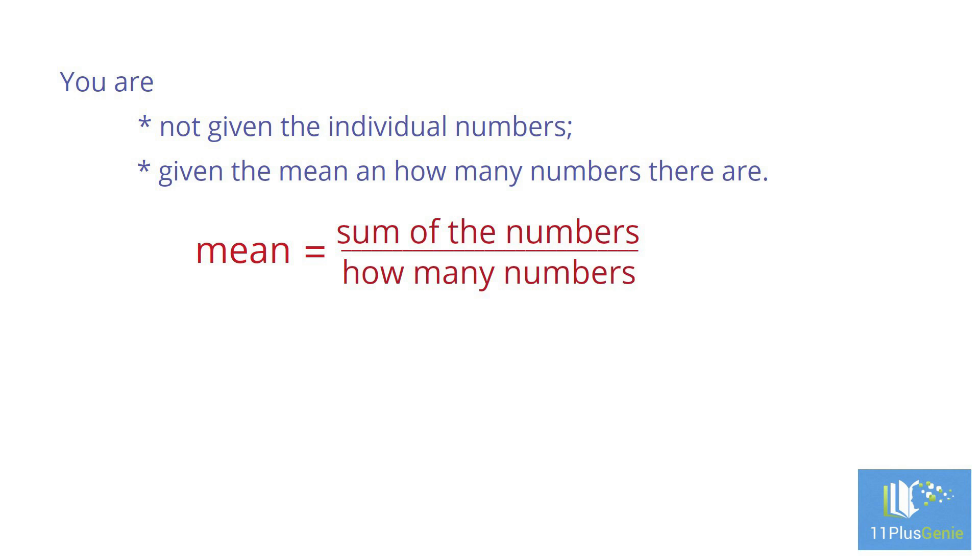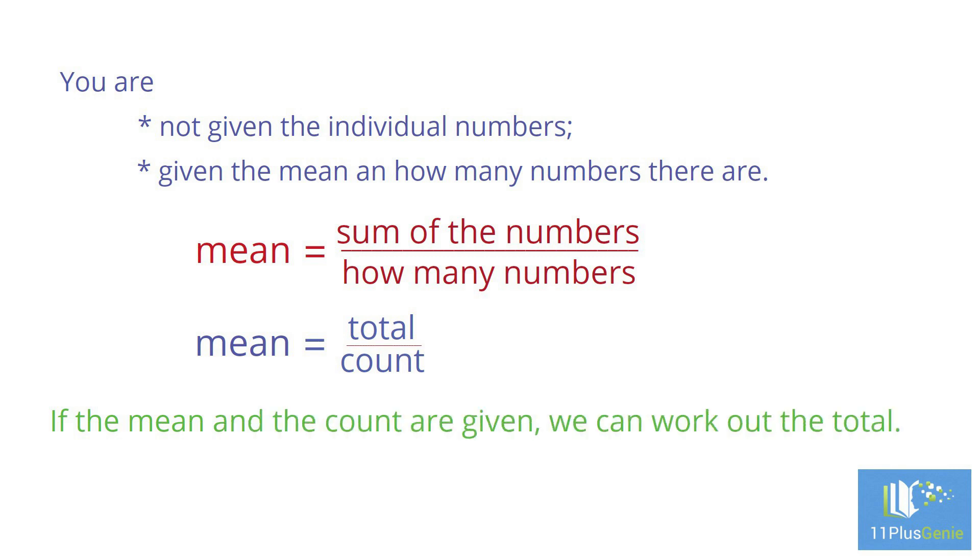Mean equals the sum of all the numbers divided by how many numbers there are. In this video, we will use this formula simplified as mean equals total divide by count. If the mean and the count are given, we can work out the total for the data by using the formula. Total equals mean times by the count.